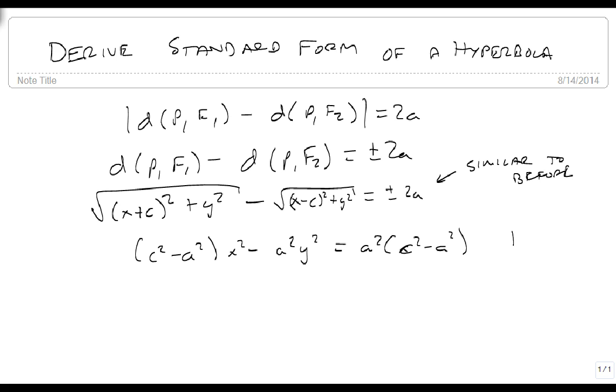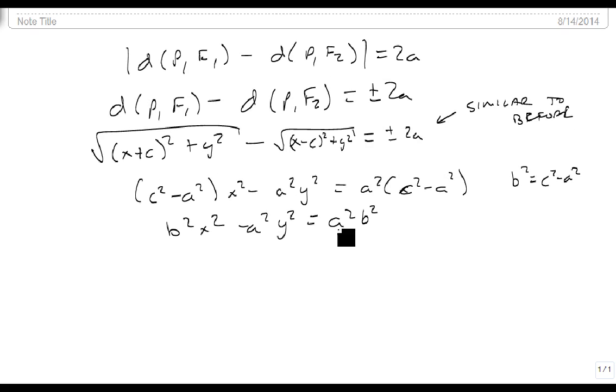And again we're going to let b squared equals c squared minus a squared. So this becomes b squared x squared minus a squared y squared equals a squared b squared, for all of the same reasons it did before.